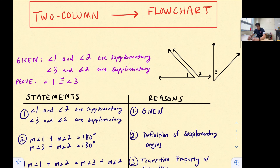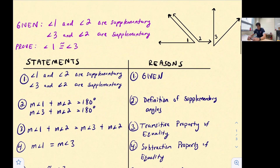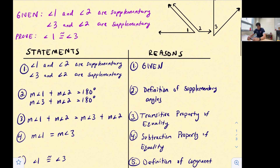This is one way that we can use flowchart proofs, but we could also just look at a diagram, look at some given information and what they want us to prove, and write a flowchart proof directly. But today we're going to look at how to compare two-column to flowchart. Here's our example: we have two pieces of given information — angle one and angle two are supplementary, and angle three and angle two are supplementary — and they want us to prove that angle one is congruent to angle three.